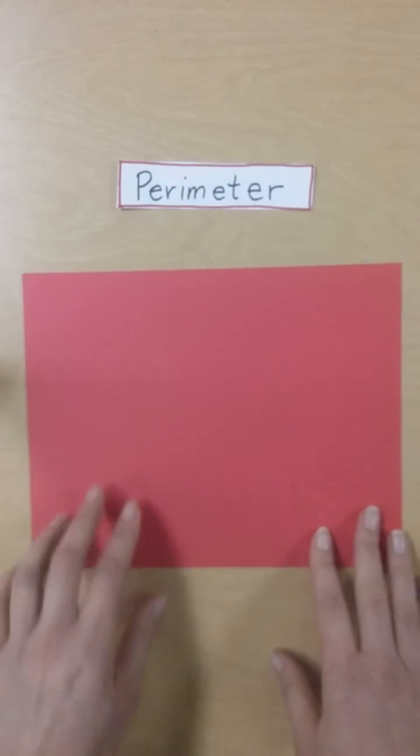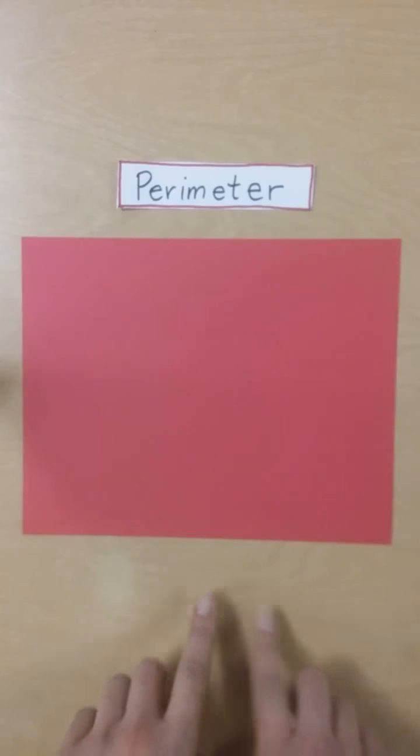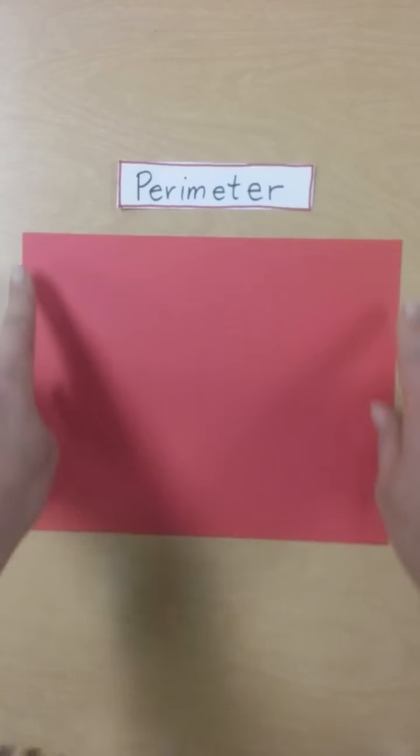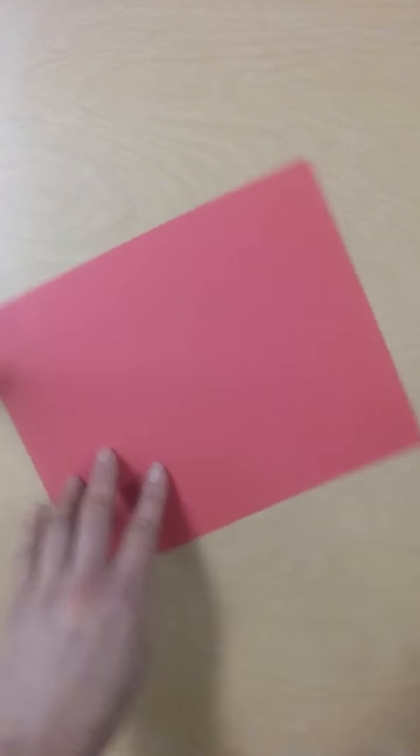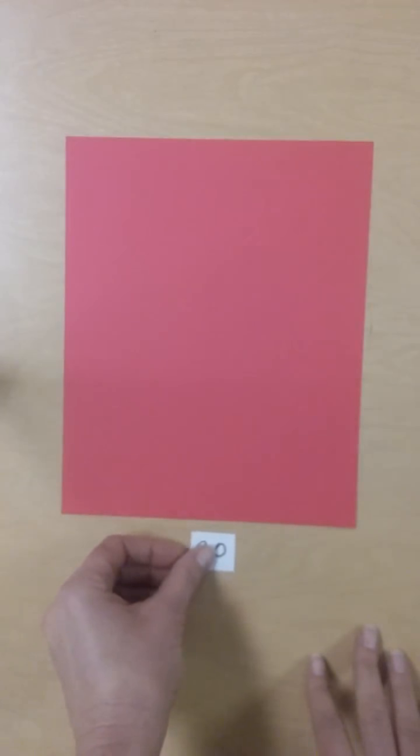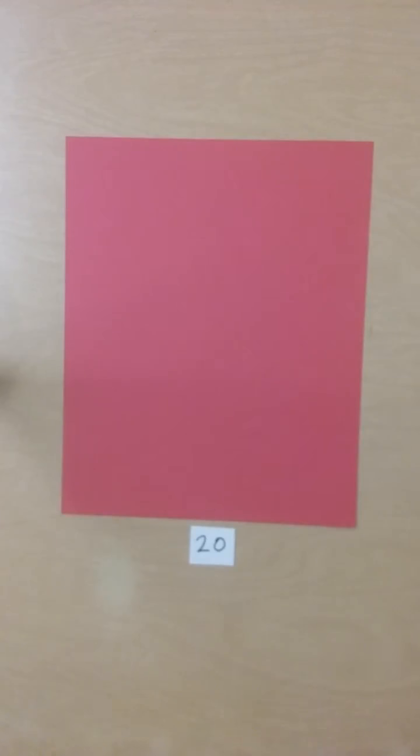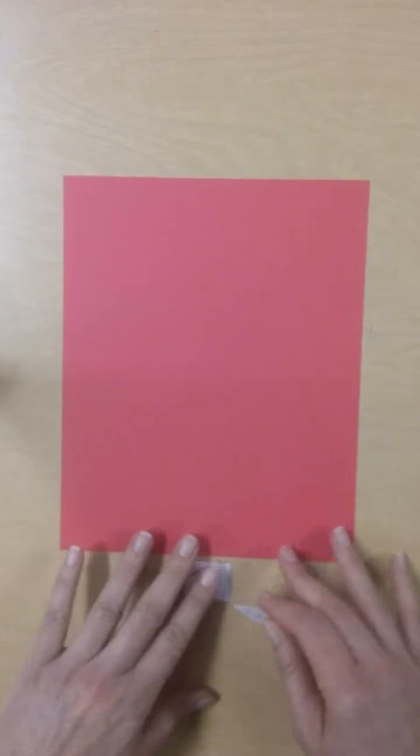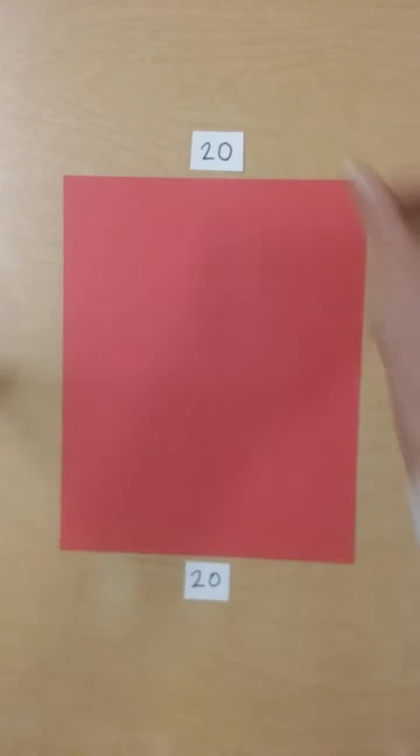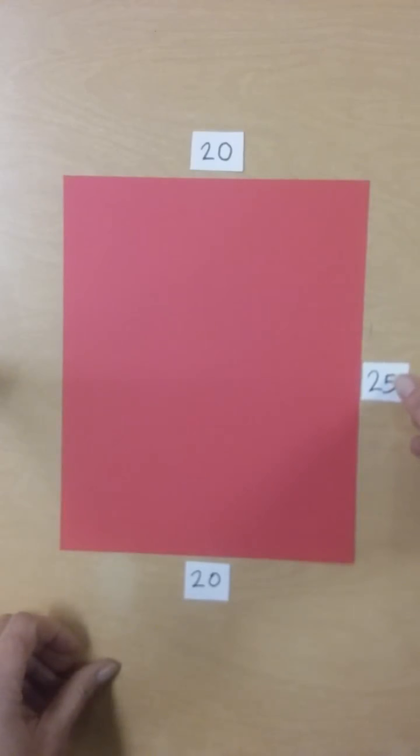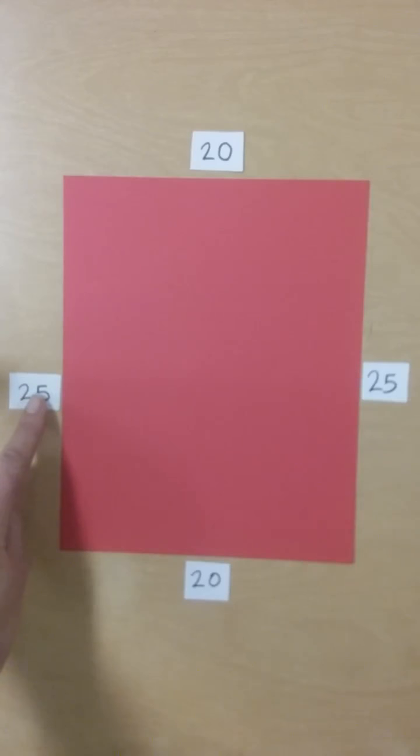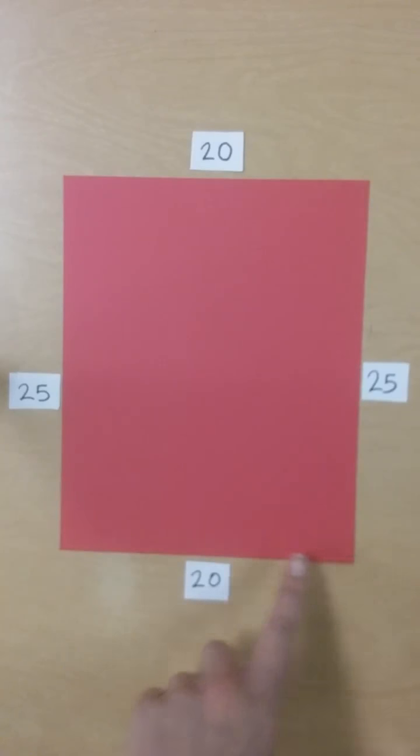So I have this shape, this figure, and I want to know the perimeter of the figure or the distance around it. To do that, first I need to measure each side, and I've done that in advance. This side is 20, and I measured in centimeters, but for now we'll just refer to them as units. This side is also 20 units, this side is 25 units, and this side is also 25 units. So to find the perimeter of this figure, I add up the measurement of all four sides.